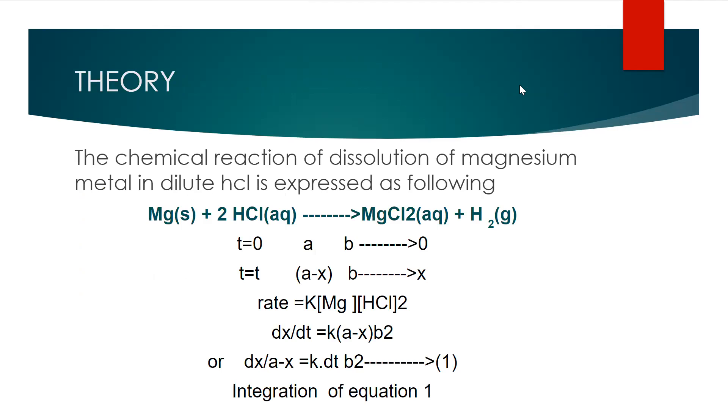Theory: the chemical reaction of dissolution of magnesium metal in dilute hydrochloric acid is expressed as following. In this reaction you will see that magnesium metal reacts with hydrochloric acid and forms magnesium chloride plus hydrogen in the form of gas.